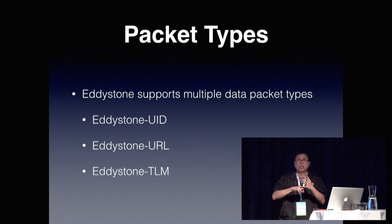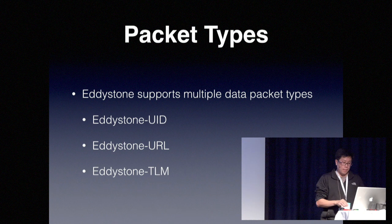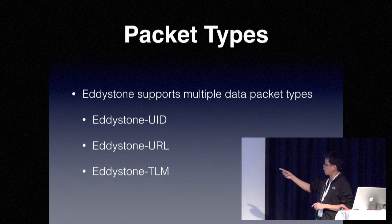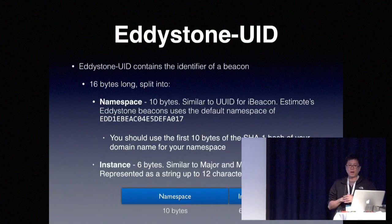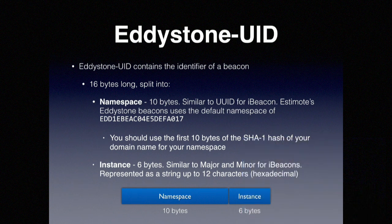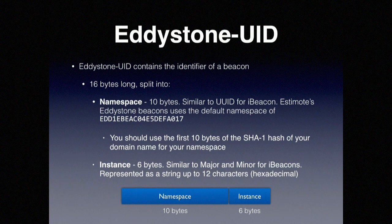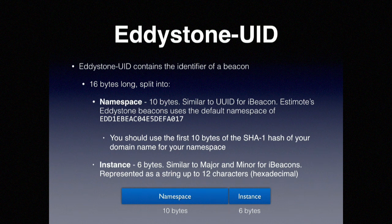iBeacons basically transmit proximity UUID, major, and minor — nothing else. For Google's Eddystone, it supports the following data types: UID, URL, and TLM. Eddystone UID transmits 16 bytes: a namespace followed by an instance. The namespace is similar to your proximity UUID — a string of hexadecimal numbers. They recommend using the first 10 bytes of the SHA1 hash of your domain name as the namespace. The instance is very similar to major and minor.